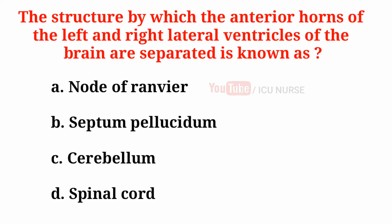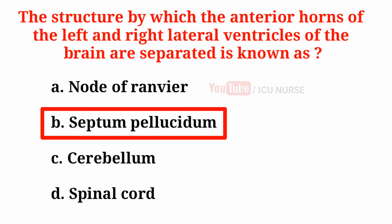The structure by which the anterior horns of the left and right lateral ventricles of the brain are separated is known as: A. Node of Ranvier, B. Septum pellucidum, C. Cerebellum, D. Spinal cord. The correct answer is B. Septum pellucidum.